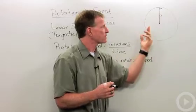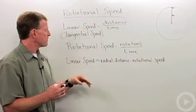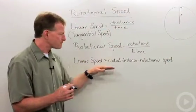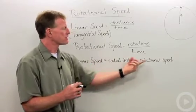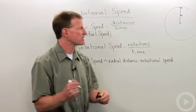But if we look at the speed that they're moving on the record, the linear speed, we can see that the linear speed is actually related to the radial distance versus the rotational speed.